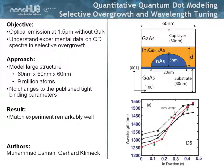They grew indium arsenide dots and then overgrew these quantum dots with an indium gallium arsenide buffer layer. These quantum dots are 5 nanometers tall. They did a couple of experiments, and I'm going to focus on the experimental data where they grew the buffer layer to be the same height as the quantum dots — 5 nanometers — and varied the indium concentration in these buffer layers.